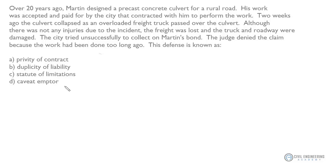This defense is known as: privity of contract, duplicity of liability, statute of limitations, or caveat emptor. The key to understanding this one is realizing that the critical piece of information is the length of time between the actual design and the incident — over 20 years. Many other damaging incidents could have occurred to the culvert over the 20 years it was in service.